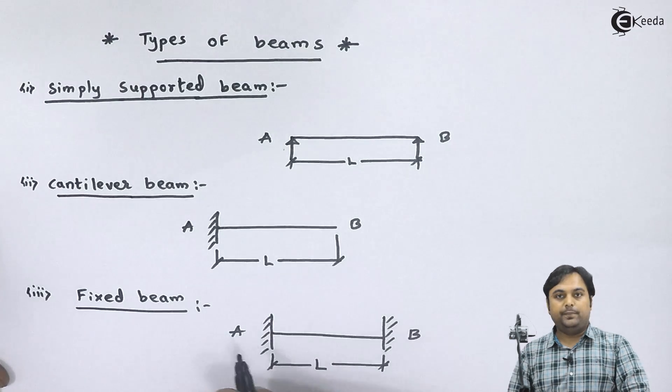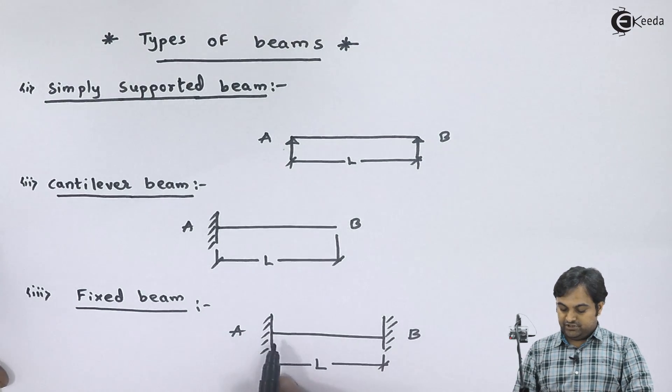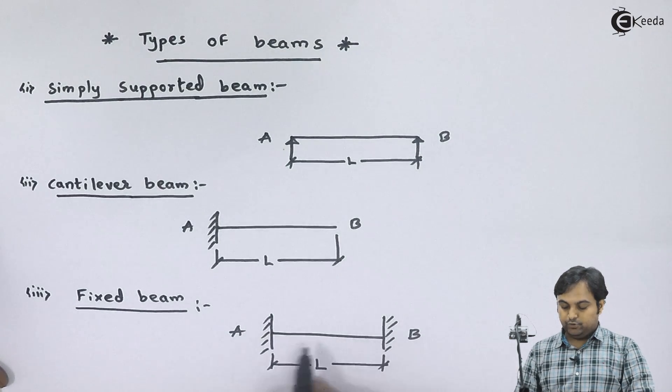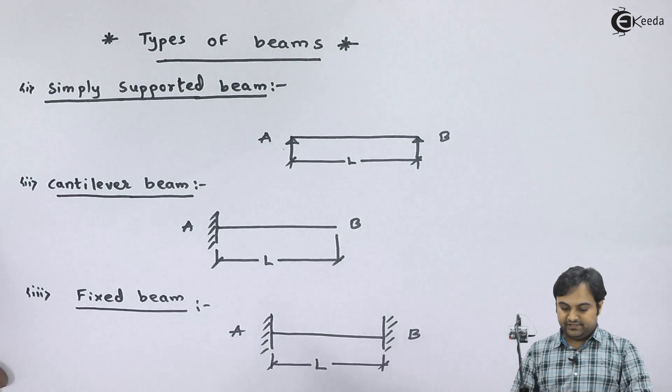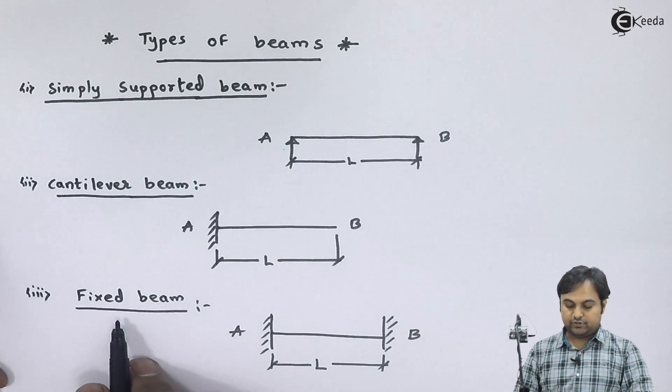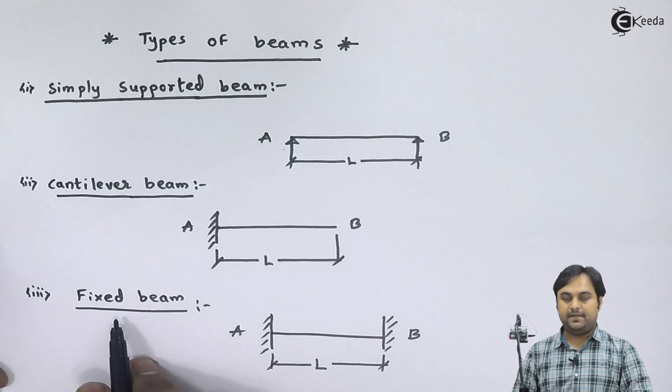If we have a beam which is fixed at both ends, that kind of beam is called a fixed beam.